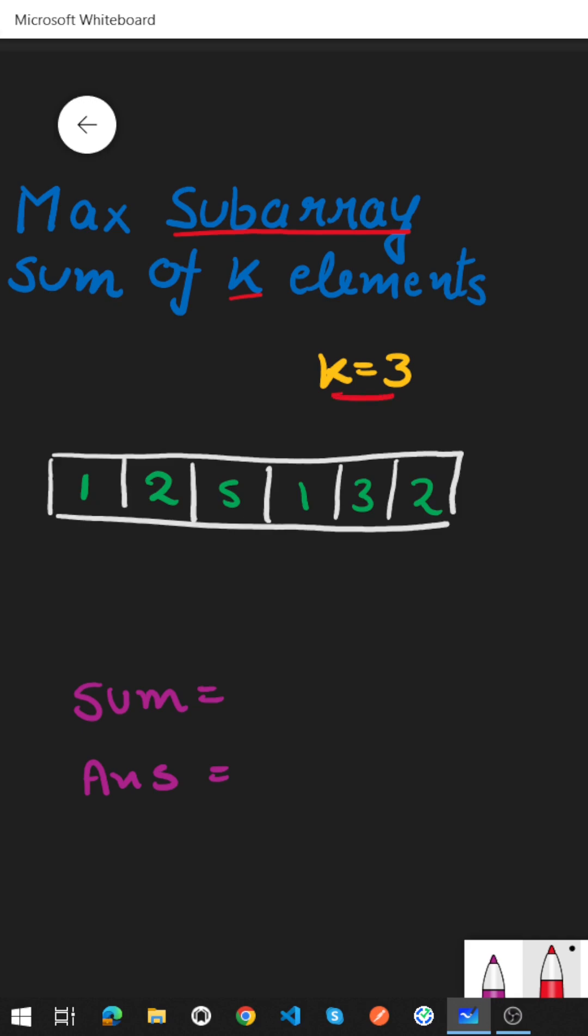In this case the k value is 3. So we need to find a subarray of size 3 which has the maximum sum. What sliding window says is that maintain a fixed size window of size k. In this case k is 3.